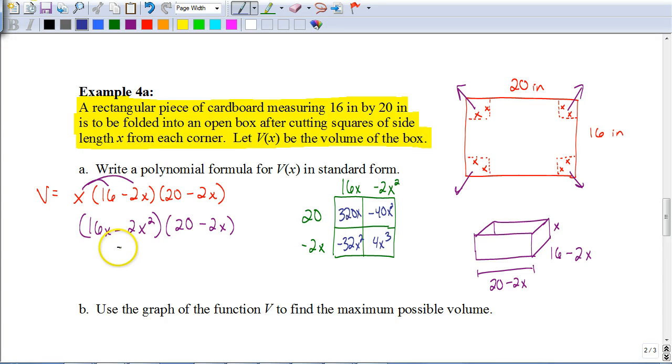So we want to put this in standard form. So we're going to start out with the 4x cubed. Next, we go to our x squared. If you notice, again, those are diagonally across from each other. So we get negative, when we add negative 32x squared plus a negative 40x squared, we get negative 72x squared. And our last term would be 320x.